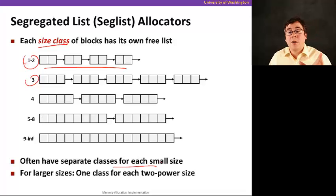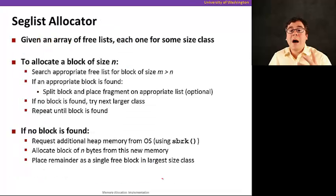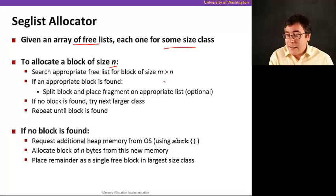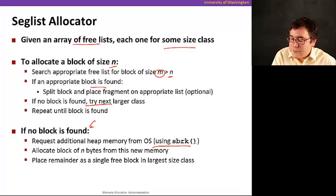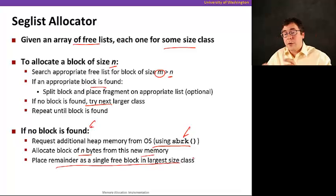We often have separate classes for each small size, and then one class for large sizes using power-of-two size classes. To allocate a block of size n, we find the free list for the smallest size class m that's larger than n. If we find an appropriate block, we allocate it. If no block is found, we try the next larger class and repeat. If still nothing is found, we increase heap size using sbrk, allocate a block of size n from the new memory, and place the remainder as a single free block in the largest class.